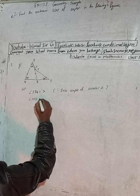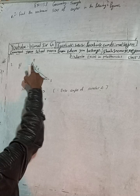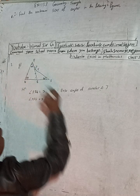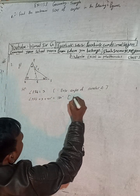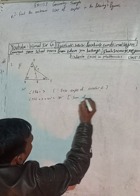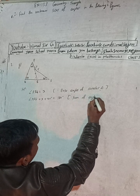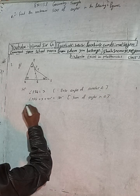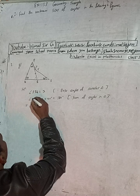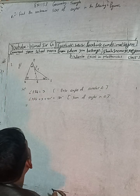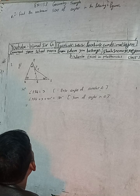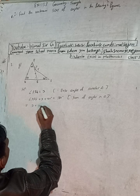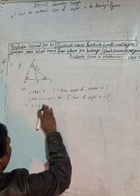Now we can write: angle PRQ plus X plus 40 degrees equals 180 degrees. The reason for this is that the sum of angles in a triangle is equal to 180 degrees. Since angle PRQ equals X, we substitute: X plus X plus 40 degrees equals 180 degrees.